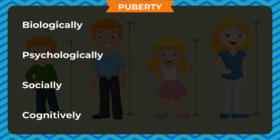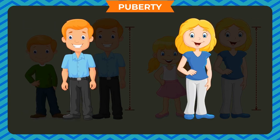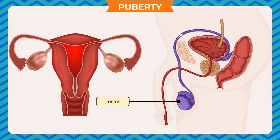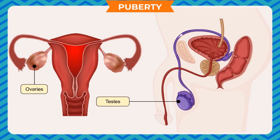This is the time when a child acquires those characteristics that would define him or her sexually. Puberty leads into adolescence. Puberty ends when an adolescent reaches reproductive maturity. Puberty is the onset of sexual maturity, marked by the development of secondary sex characteristics.